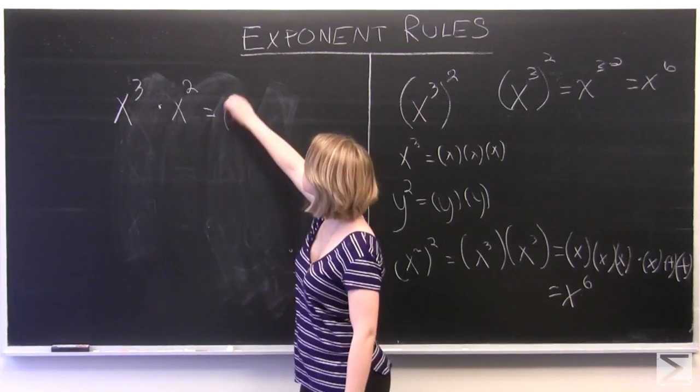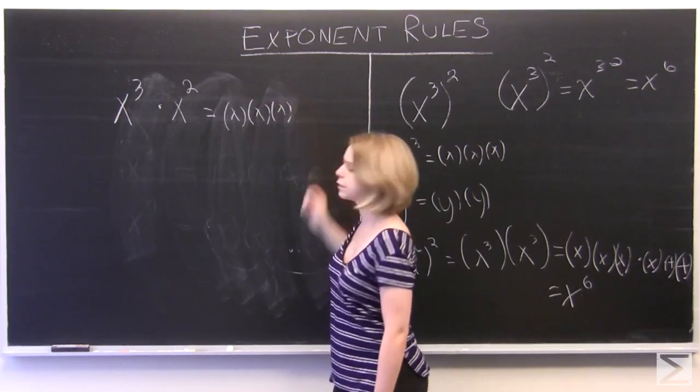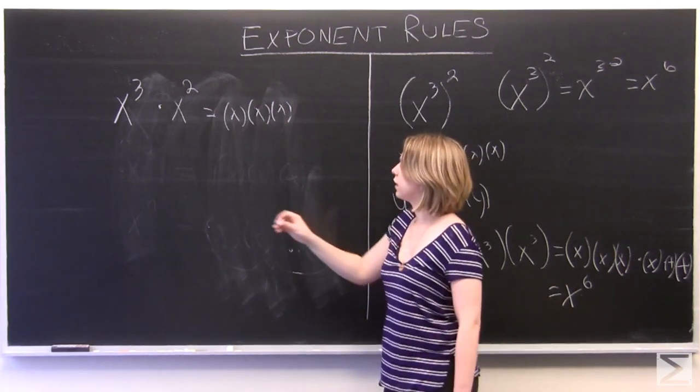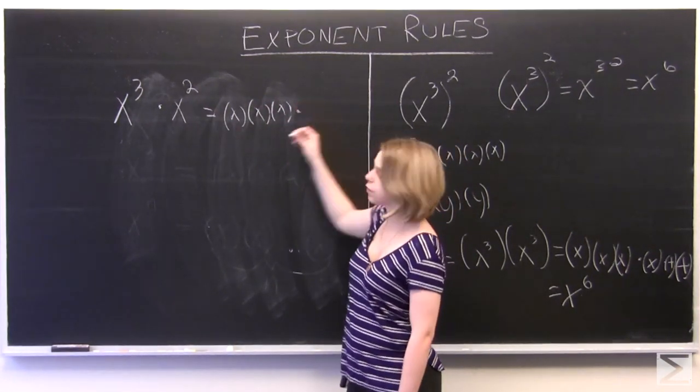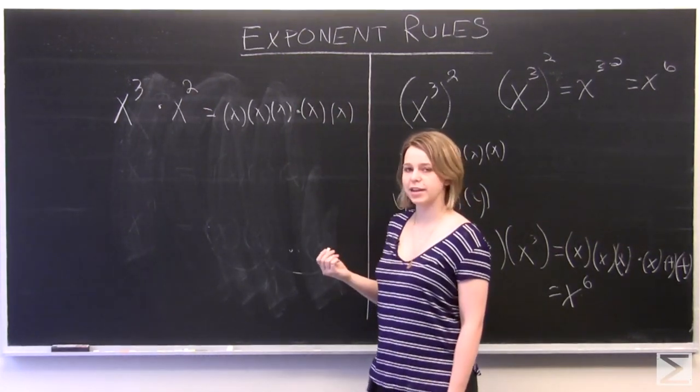We know that x cubed is going to be equal to x times x times x. And then we'll multiply that with x squared, which we know is x times x.